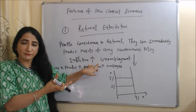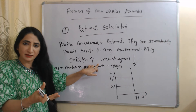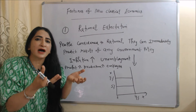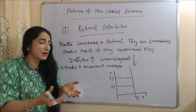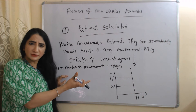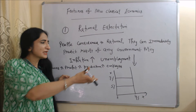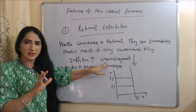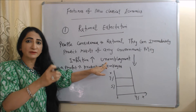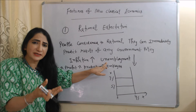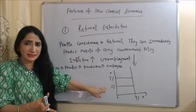But under rational expectations, government policy does not work because people immediately predict the result of inflation. They know their purchasing power and real income will fall, so they immediately demand higher wages. When employees demand higher wages, producer profits cannot increase, production does not increase, producers do not hire more employees, and the unemployment rate does not fall. So government policy becomes ineffective because people immediately predict its result.